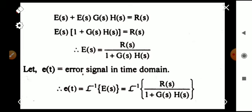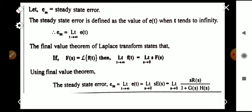This is in the s-domain. To find the error signal in the time domain, we take the Laplace inverse. So e(t) equals the Laplace inverse of R(s) / [1 + G(s)·H(s)], and that is the actual error signal.